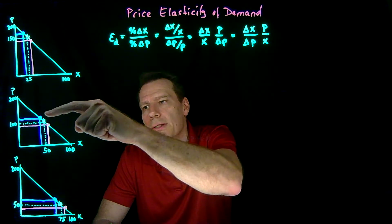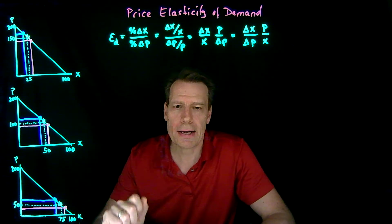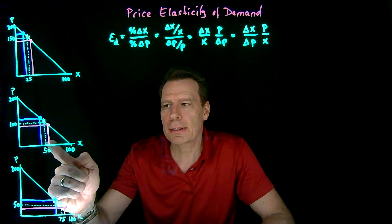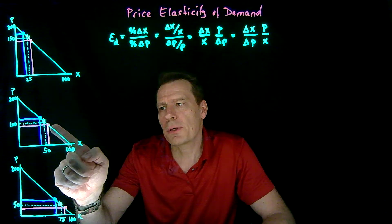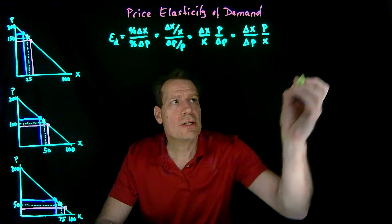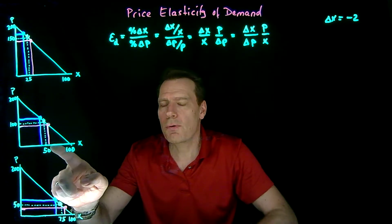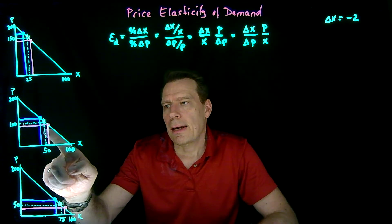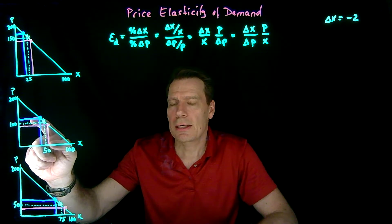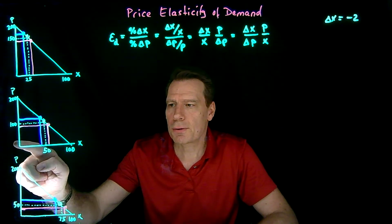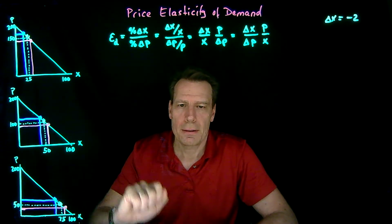To do that, I've picked two other points — a blue and a magenta point — where the magenta point lies one unit of x to the right of the green point, and the blue point lies one unit of x to the left. So when I go from the magenta to the blue, the change in x is equal to minus 2. The slope of these demand curves is minus 2, so going over by 2 means going up by 4.